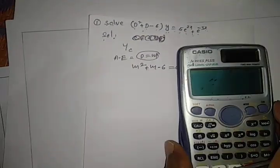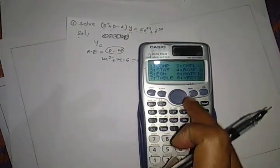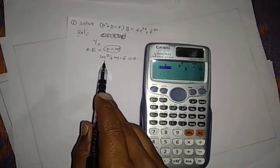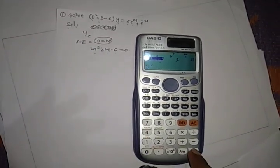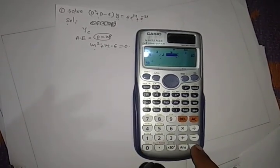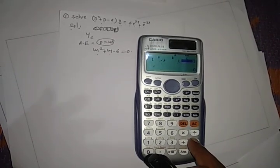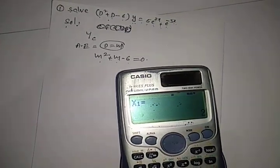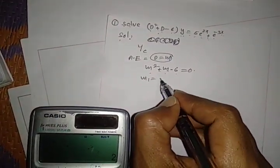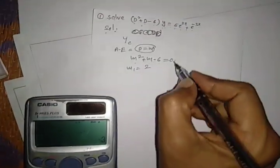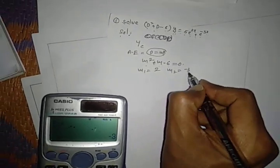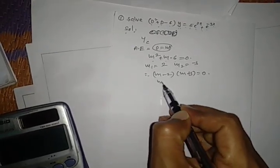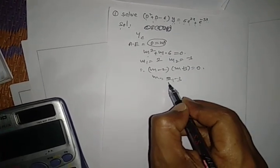Now find the roots of this quadratic equation using the calculator — equation number 5, press number 3. Here, a, b, c means m² coefficient, m coefficient, and constant. So m² coefficient is 1, m coefficient is 1, and the constant value is -6. So x1 is equal to 2, meaning m1 = 2. Press equal again: m2 = -3. Therefore, (m - 2)(m + 3) = 0, giving m = 2 and m = -3.